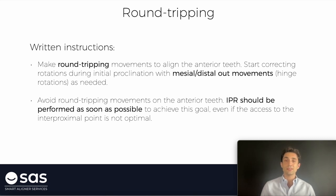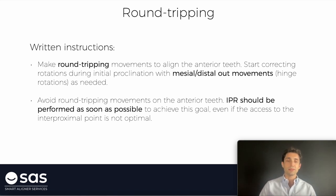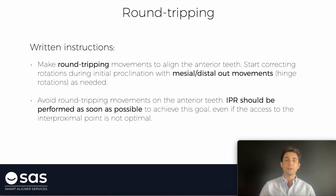Next point: round tripping. With round tripping movements, we may need them or may not. In cases where we can apply round tripping, we should write this instruction: please make round tripping movements to align the anterior teeth. Start solving rotation during initial proclination with mesial or distal out movements at the same time as the proclination. Why do I want to ask this to the technician? Because when we procline anterior teeth, if we ask to do hinge rotations on rotated incisors or canines, those movements are very predictable and we can start solving those rotations from the beginning. We also create better access to the interproximal contact if we need to do IPR. But in some cases we cannot do round tripping — on crowding cases with periodontal problems, thin biotype, adult patients, when we have lower anterior teeth proclined. In those cases, I don't want to see round tripping because it's very dangerous for the patient.